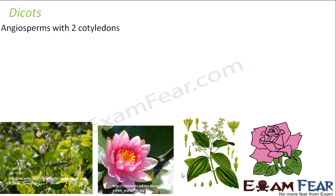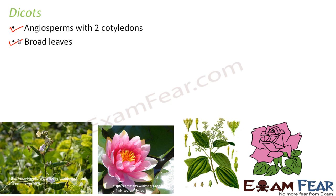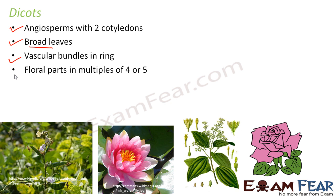Dicots are angiosperms with two cotyledons. They have broad leaves — broader than monocots. The vascular bundles are arranged in the form of a ring, meaning the xylem and phloem are in a ring-like structure. Floral parts are in multiples of four or five, so the flowers will have four or five parts, or multiples thereof such as eight, ten, twelve, or fifteen.